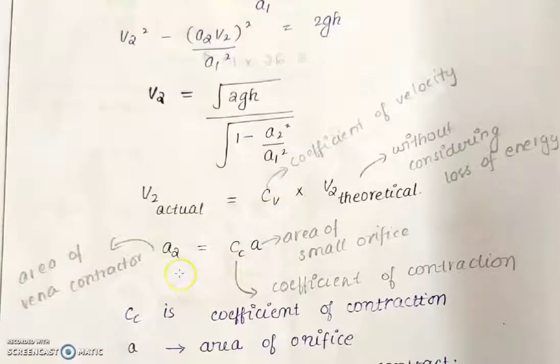Now we will see one example. An orifice meter with a given orifice diameter is inserted in a pipe of 24 cm diameter. The pressure gauges fitted upstream and downstream of the orifice meter give readings of 21 N/cm² and 11 N/cm² respectively. The coefficient of discharge is 0.6. Find the discharge of water through the pipe.